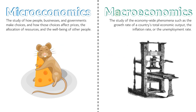You've probably noticed that there are two principles courses in economics: microeconomics and macroeconomics. This class covers microeconomics, which is the study of how people, businesses, and governments make choices and how those choices affect prices, the allocation of resources, and the well-being of other people.